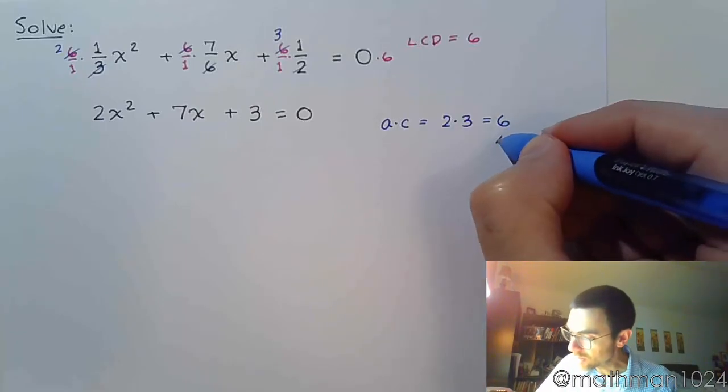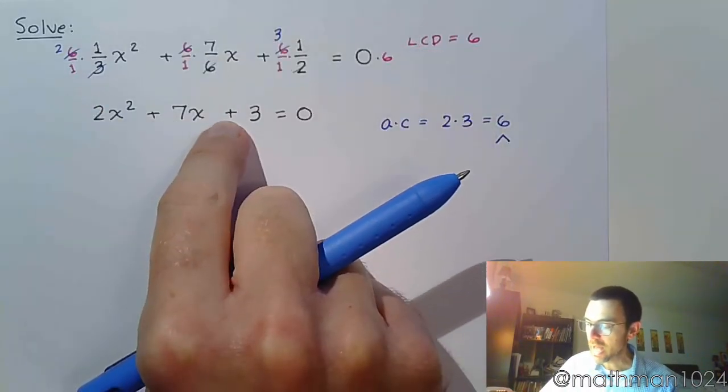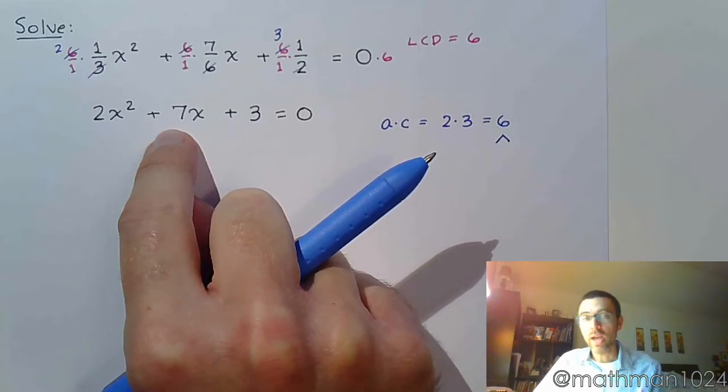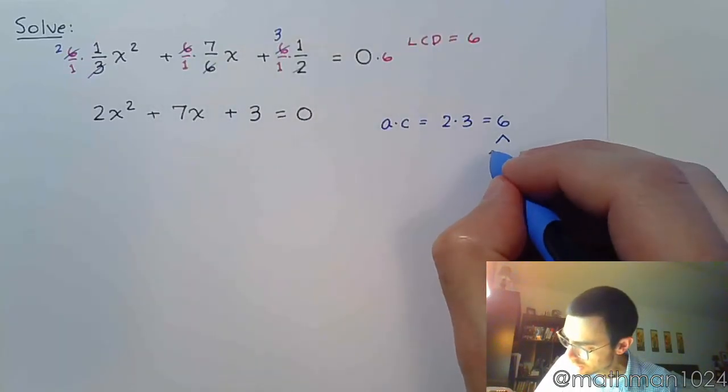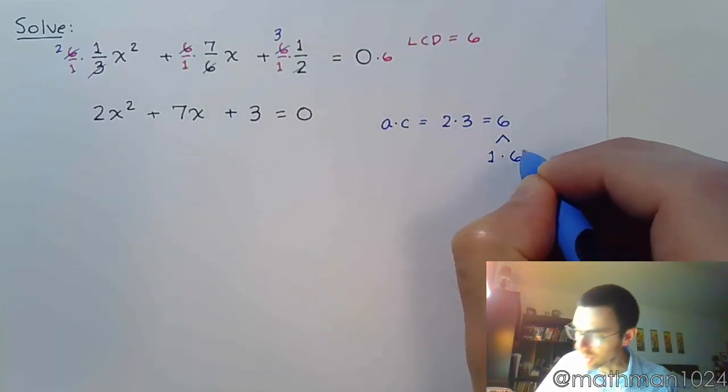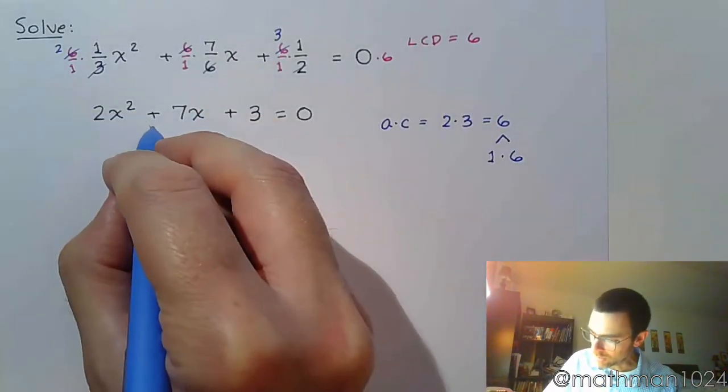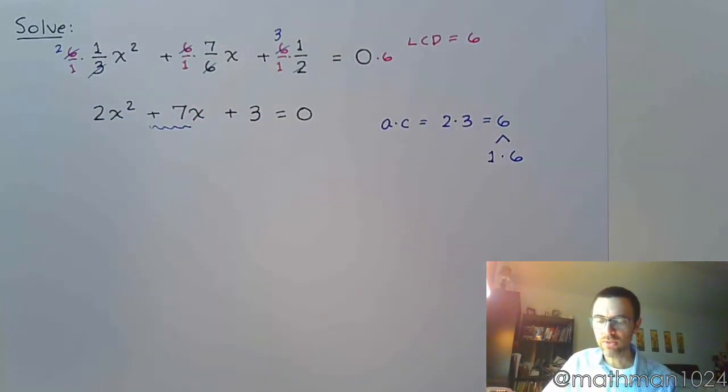And I want to find the factors of 6 that are going to add to give me 7. So the factors of 6 that add to 7 are 1 and 6. And so that's how I'm going to break up that 7x right there in the middle.